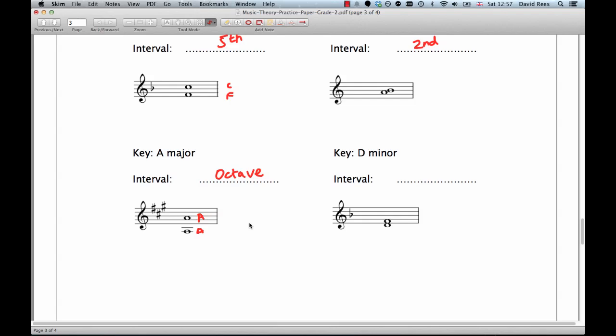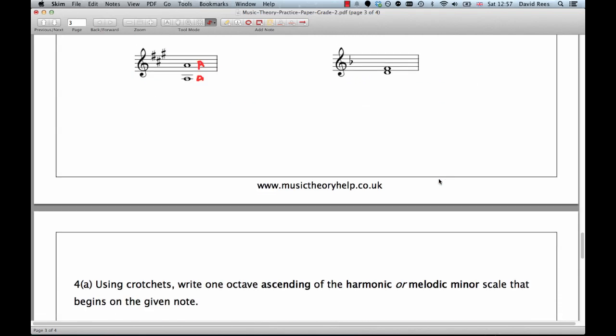And the next one is in D minor, which is quite important to know. And we are going from a D at the bottom to an F. So how many steps do we have counting the bottom and the top? We have D, E, and F. So that's three steps. So we're dealing with some kind of third. And we're lucky in this case that we don't need to go into too much detail as to what kind of third that is.